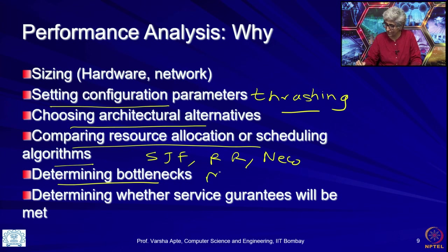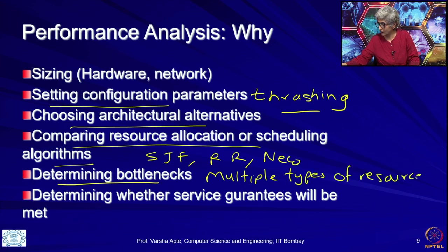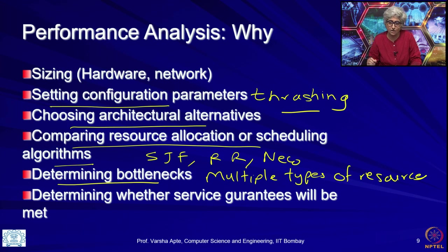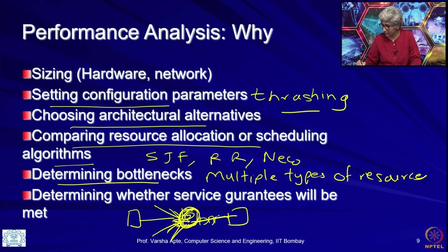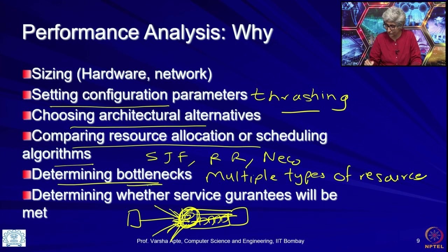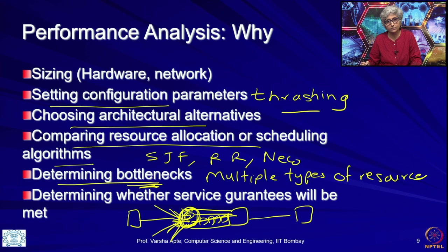Determining bottlenecks is another interesting reason. When multiple types of resources are used by users to complete their jobs, different resources will see different levels of use. For example, in a network with many switches and links, there could be one switch or link to which many links are connected that becomes the bottleneck — the link on which a lot of packets are arriving. As the network owner, you need to know your bottleneck so you can fix it, perhaps by adding an extra link or one with higher bandwidth.